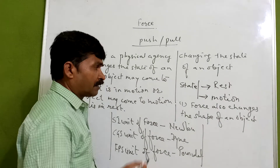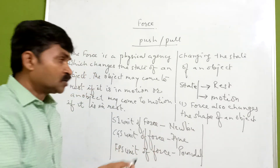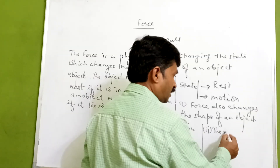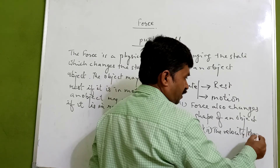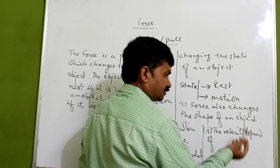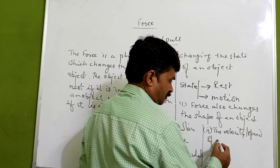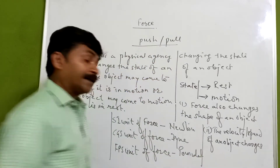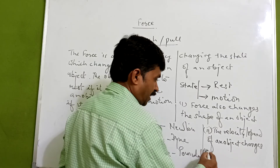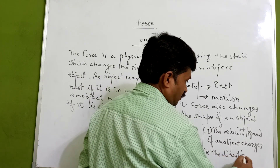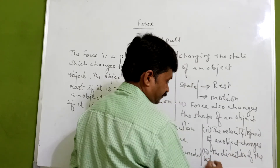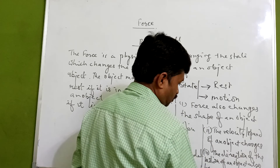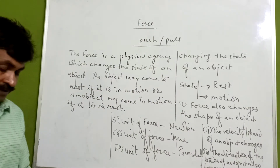Now another thing: if force is applied, it is definitely changing the state, so motion is there. What is motion? There will be a change in the velocity or speed of an object. The velocity or speed of an object changes after applying the force. Also, the direction of the motion of an object also changes.